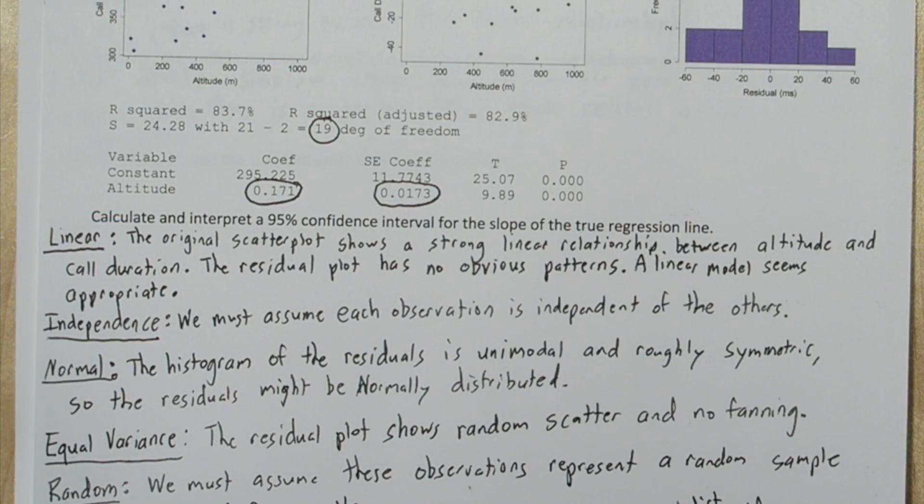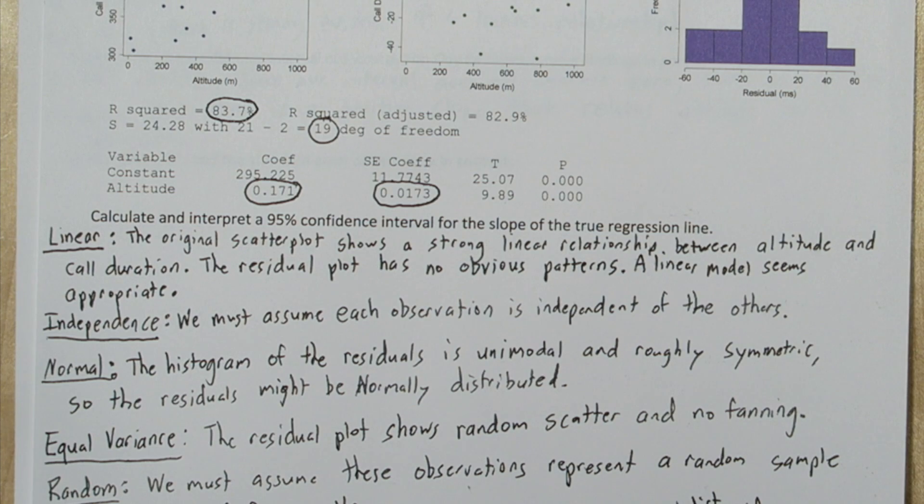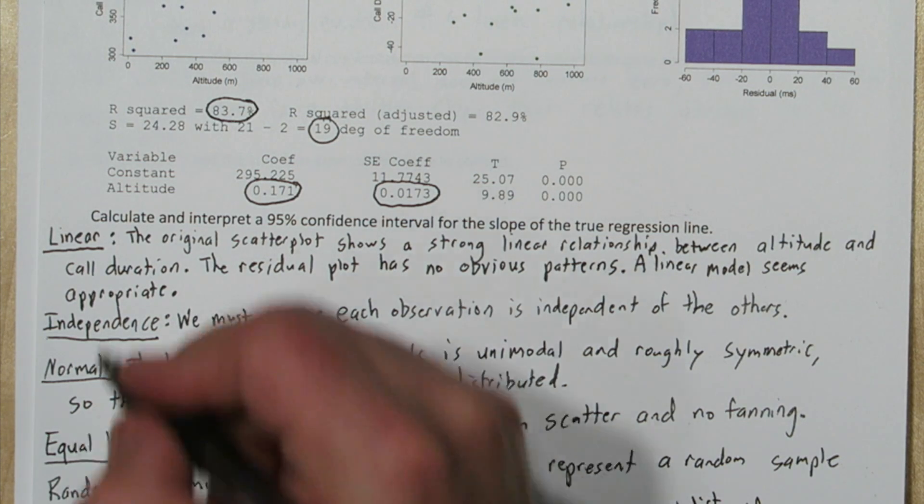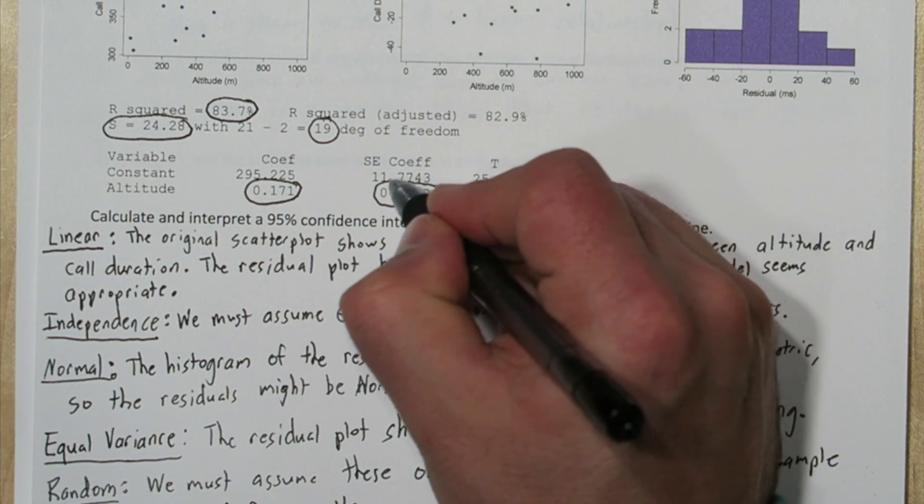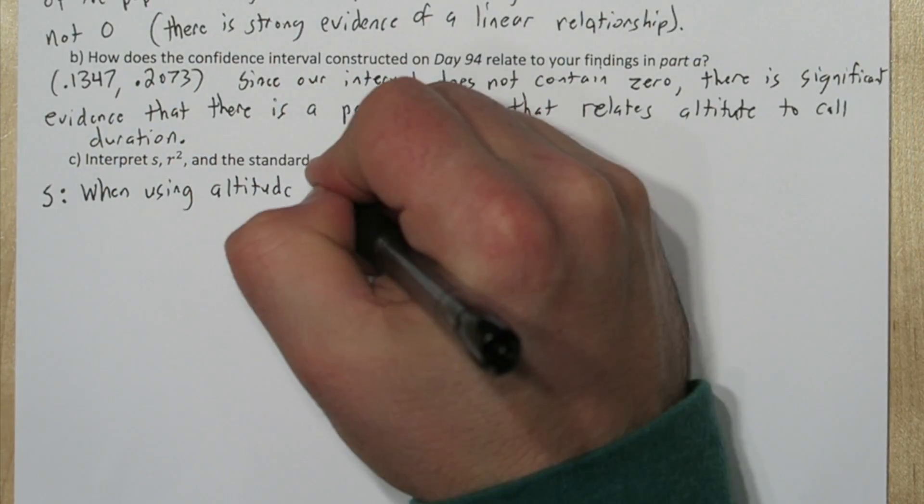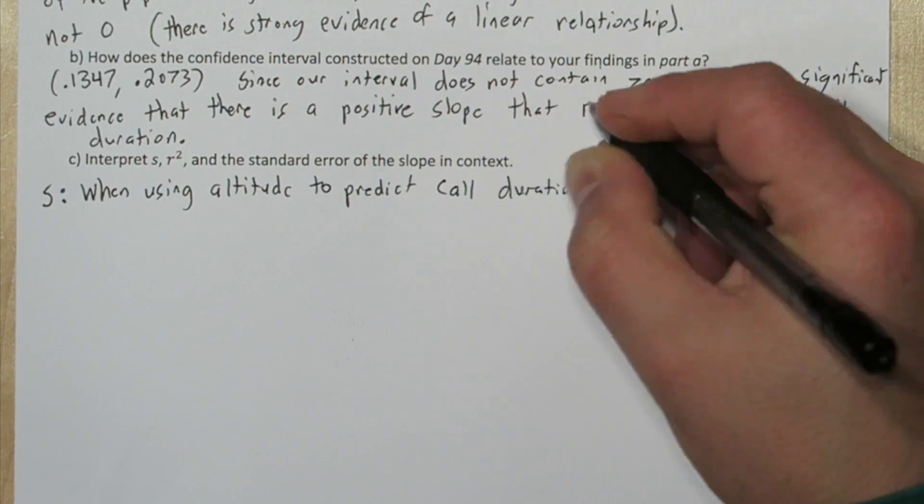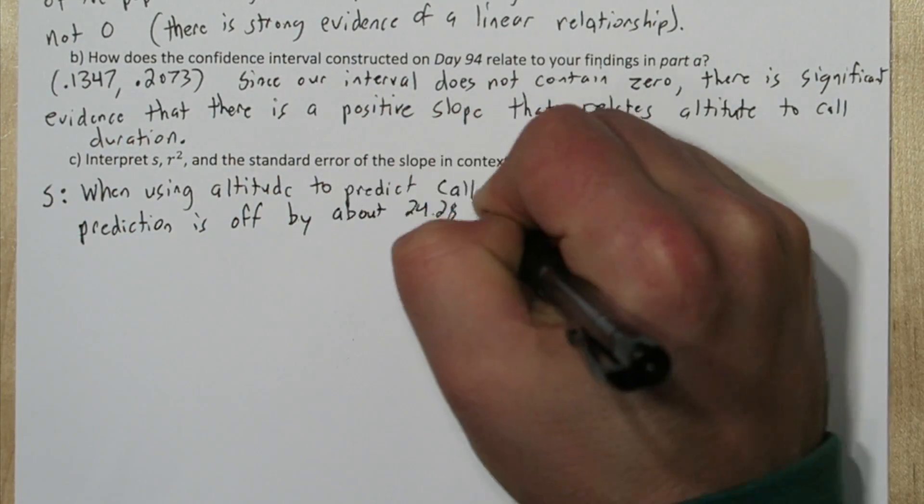Now for part c, we have all these values in our computer output. Always use the regular r-squared, not the r-squared adjusted. And here's s right here. And here's the standard error of our slope. We can interpret s like this. When using altitude to predict call duration, our typical prediction is off by about 24.28 milliseconds.